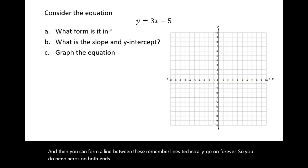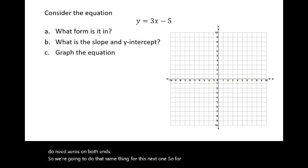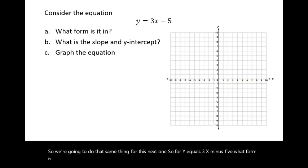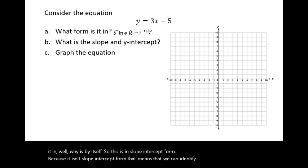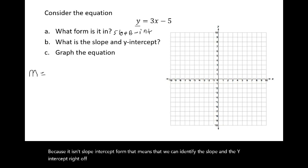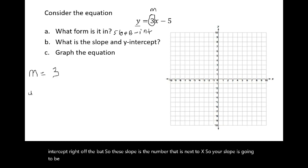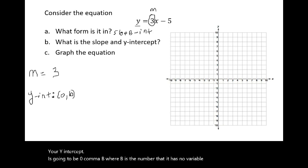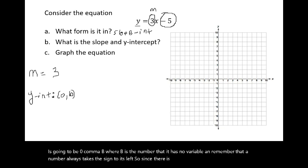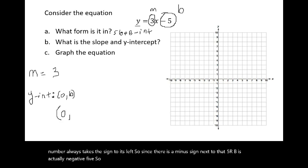For y equals 3x minus 5: y is by itself, so this is in slope-intercept form. The slope is the number next to x, so slope equals 3. The y-intercept is (0, b), where b is the number with no variable. Since there is a minus sign next to 5, b is negative 5. So the y-intercept is (0, negative 5).